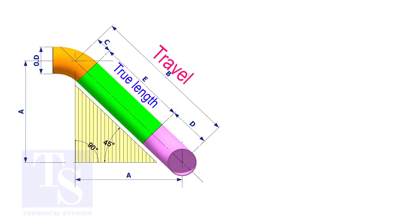Assume that the elbows are short radius. Nominal pipe size is 4 inch. The travel length is 1500 millimeters. The joint gap is 3 millimeters. Calculate the true length of the spool.